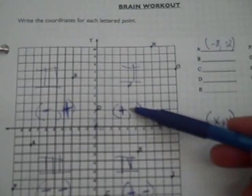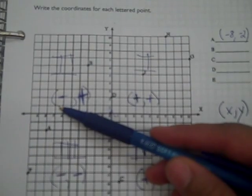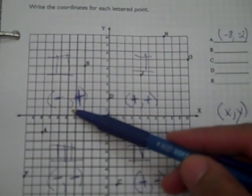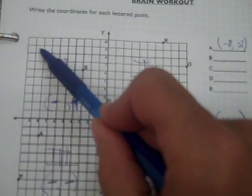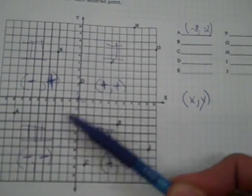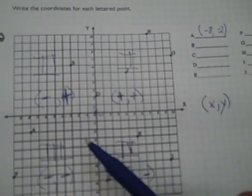So the rule in the first quadrant is that both x and y will be positive. For the second quadrant, x will be negative and y will be positive. In the third quadrant, both x and y coordinates will be negative. And in the fourth quadrant, x will be positive and y will be negative. Think of a line of opposite reflection: the first and third quadrants are opposites of each other, and the second and fourth quadrants are also opposites.